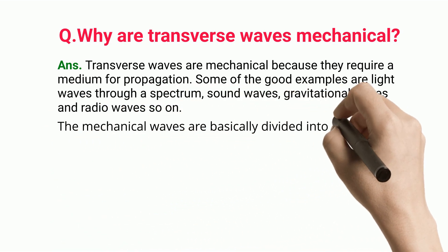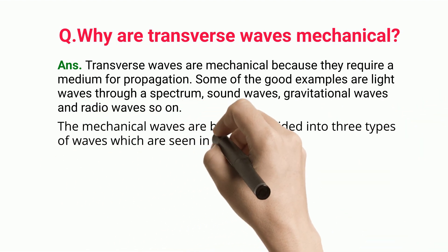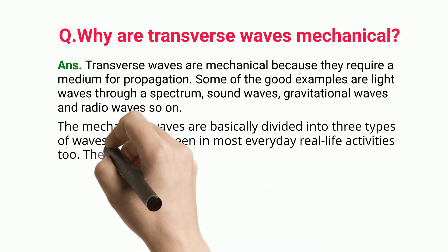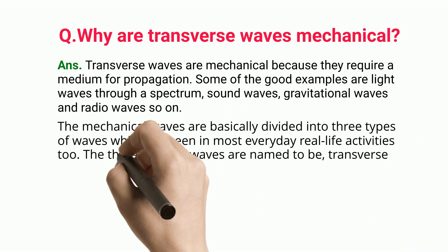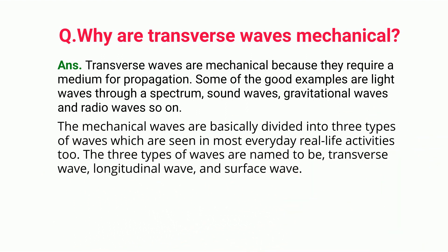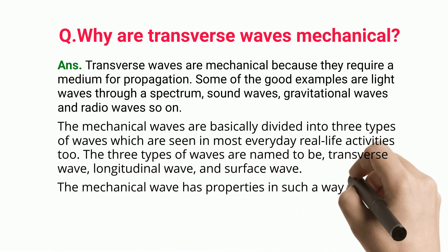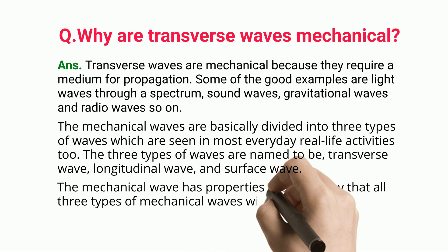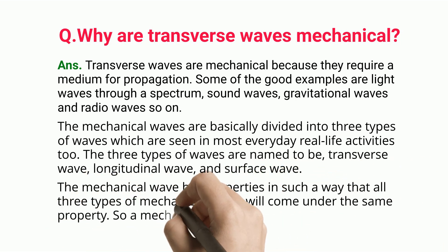The mechanical waves are basically divided into three types of waves which are seen in most everyday real-life activities. The three types of waves are transverse wave, longitudinal wave, and surface wave. The mechanical wave has properties in such a way that all three types of mechanical waves will come under the same property.